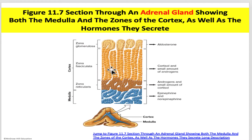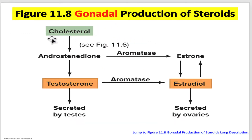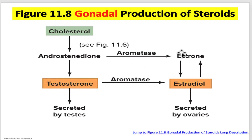So these two cortical layers sort of piggyback each other. In the gonads, cholesterol is once again the substrate and is converted in males to testosterone. In females, they have an extra enzyme that takes these intermediaries and converts them into the female sex hormones — estradiol.